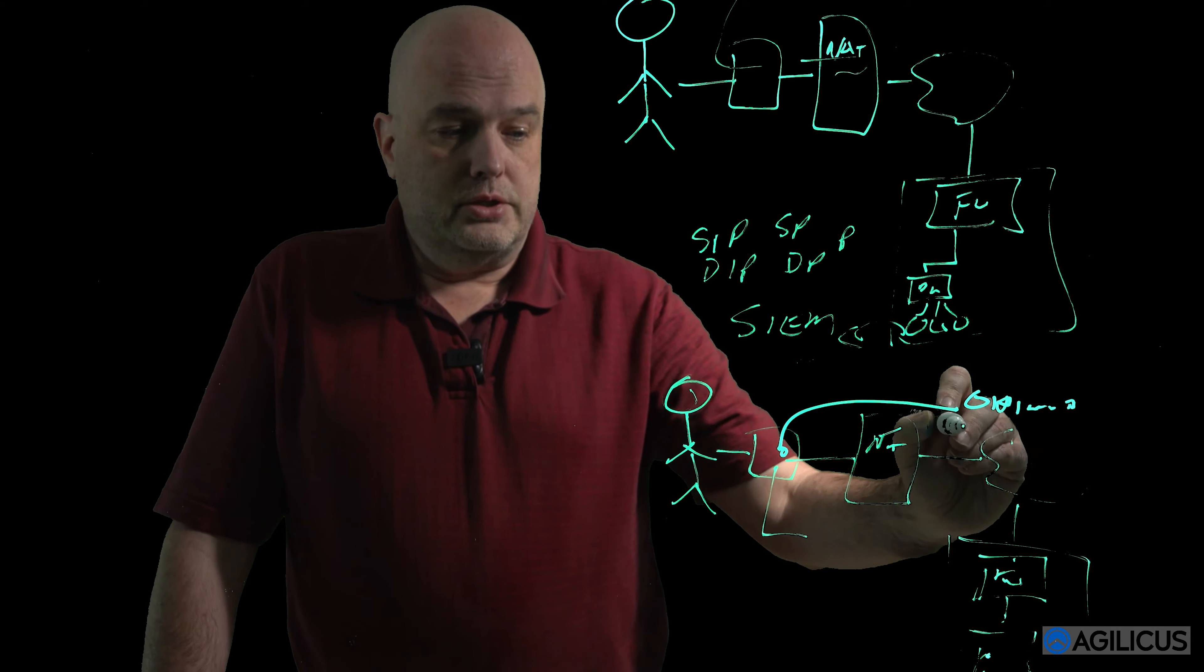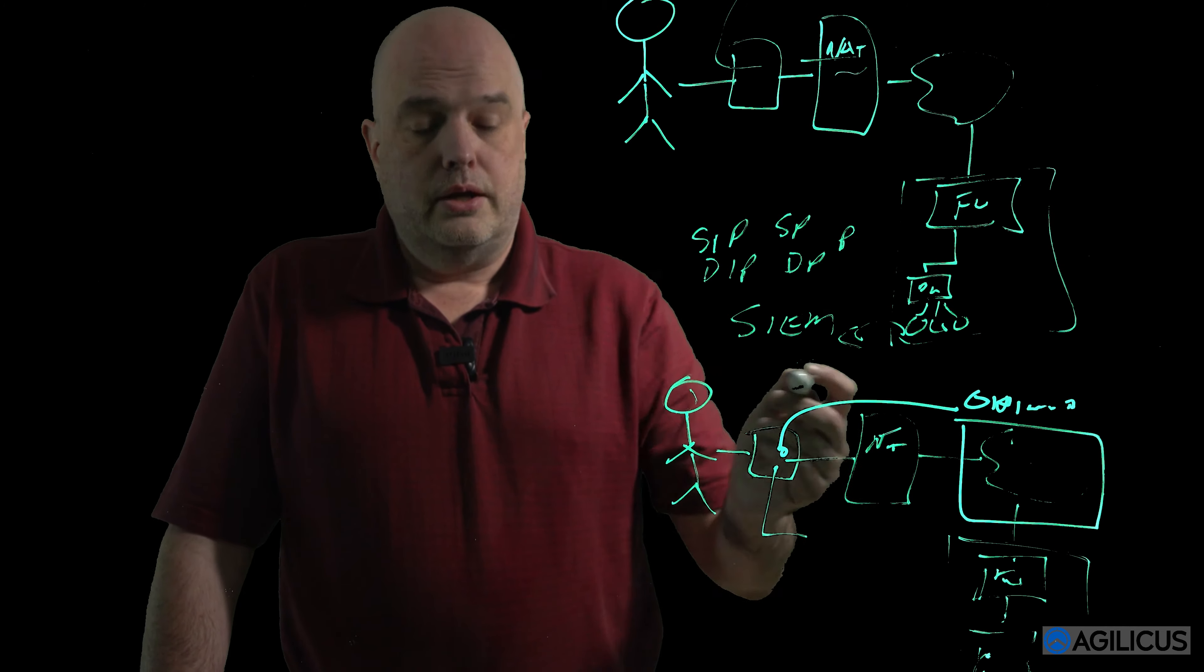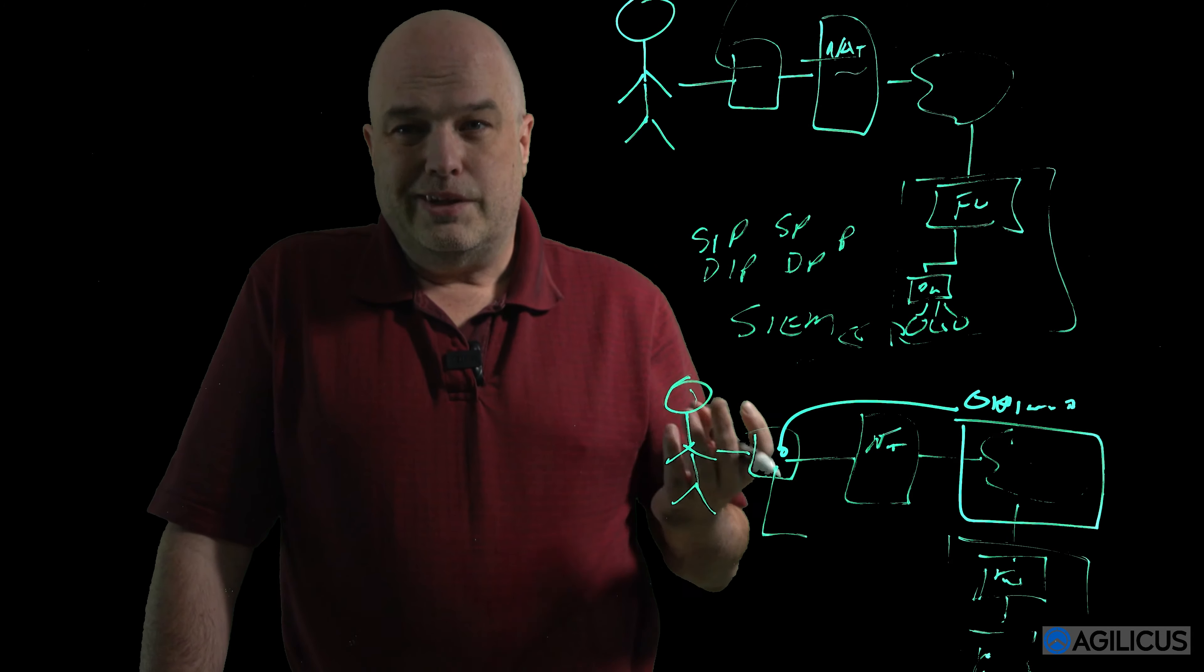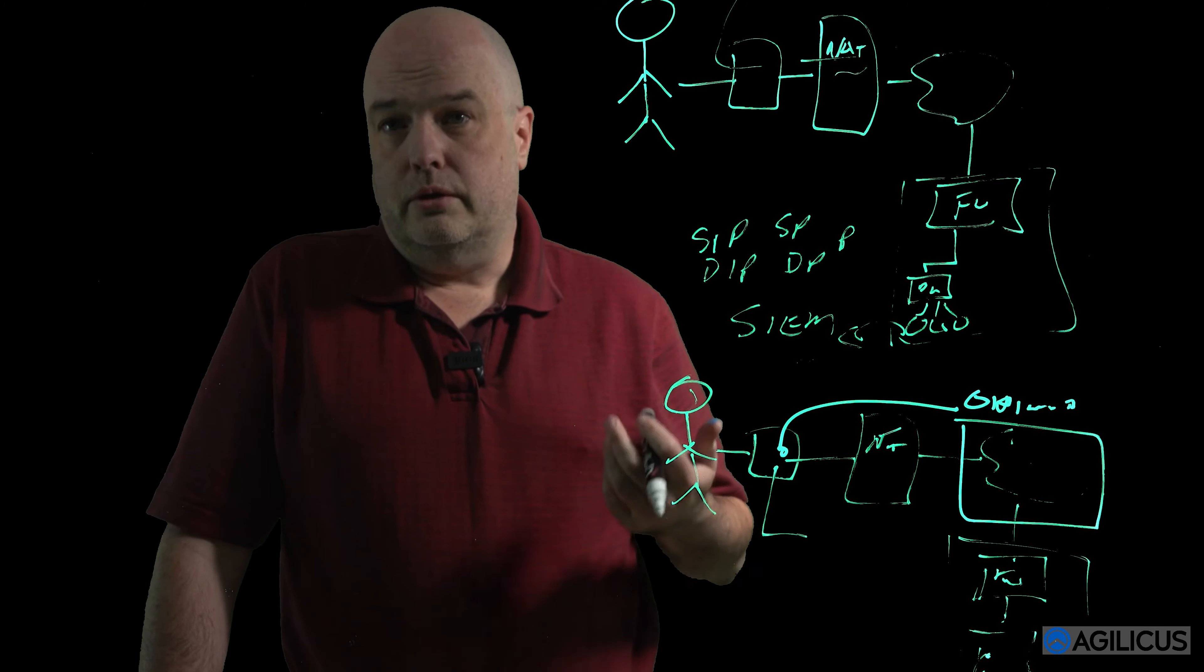And in the Agilicus Secure Cloud, which operates from your standpoint here on the internet, that JWT is everything. The user is in possession of it, we know who they are, where they're going, and what they're doing.